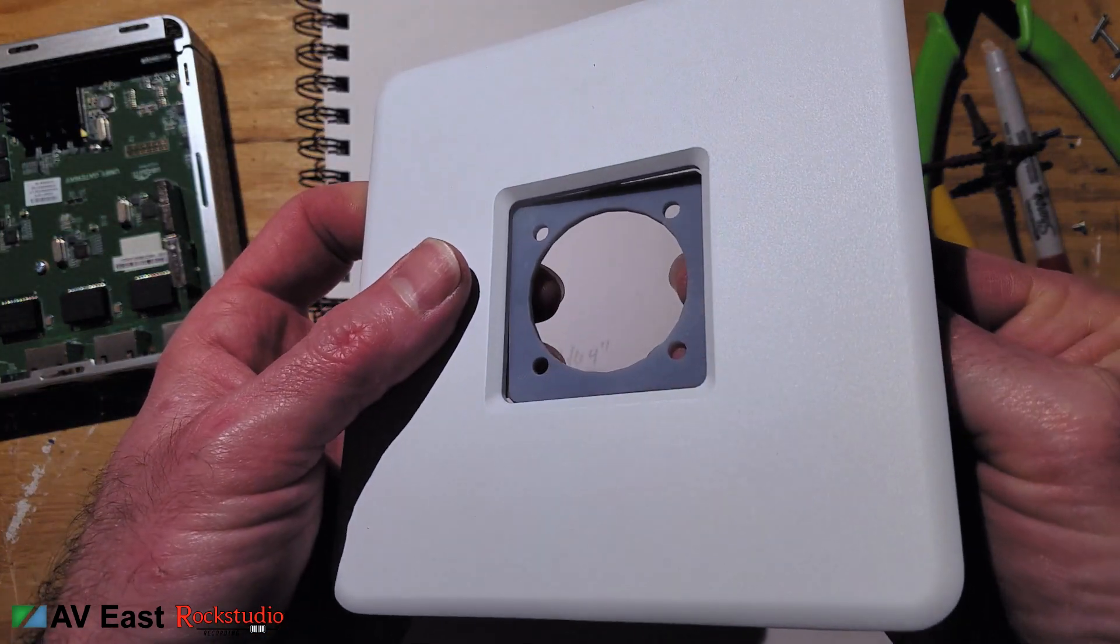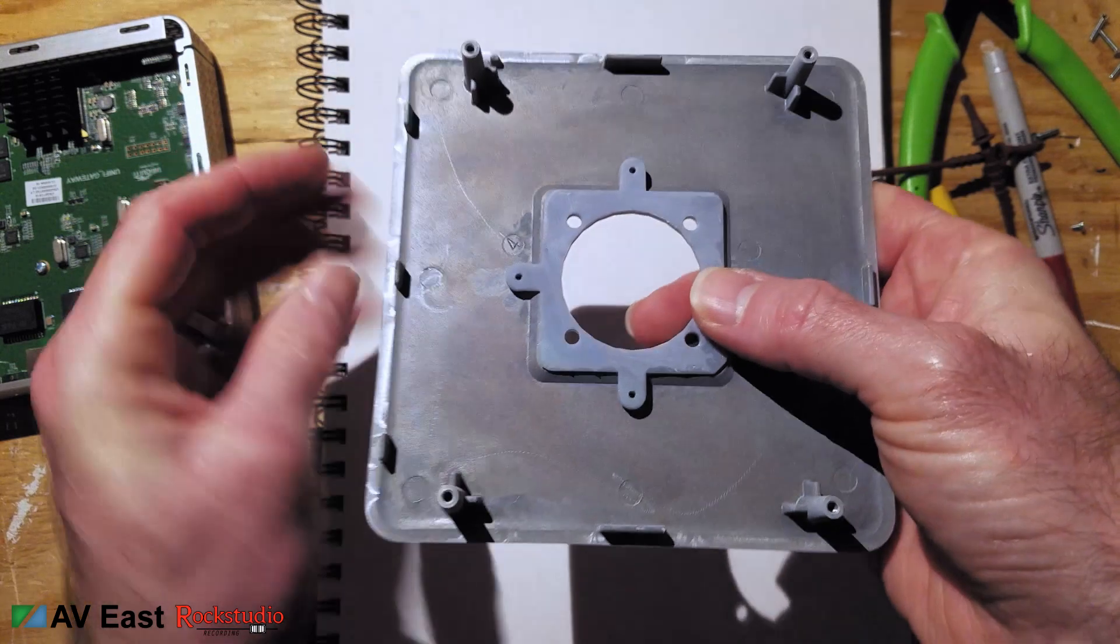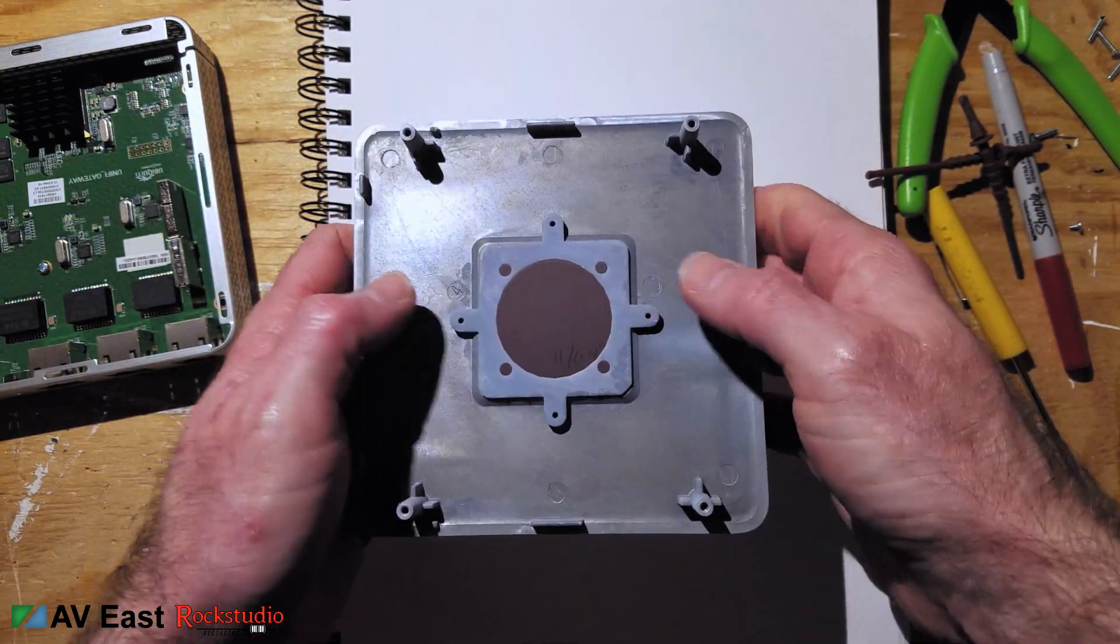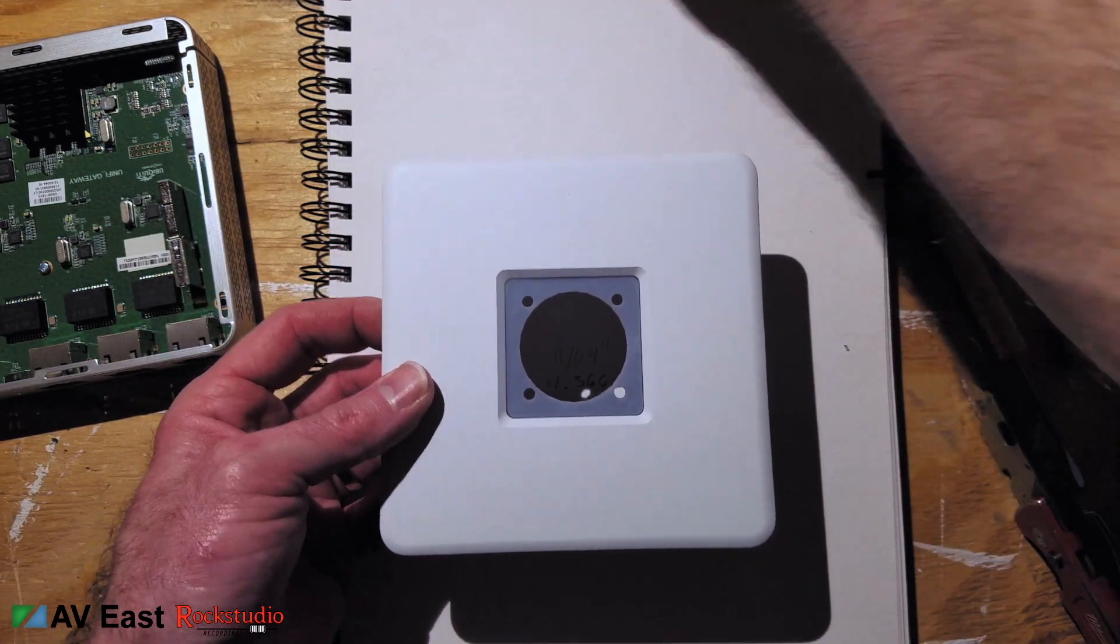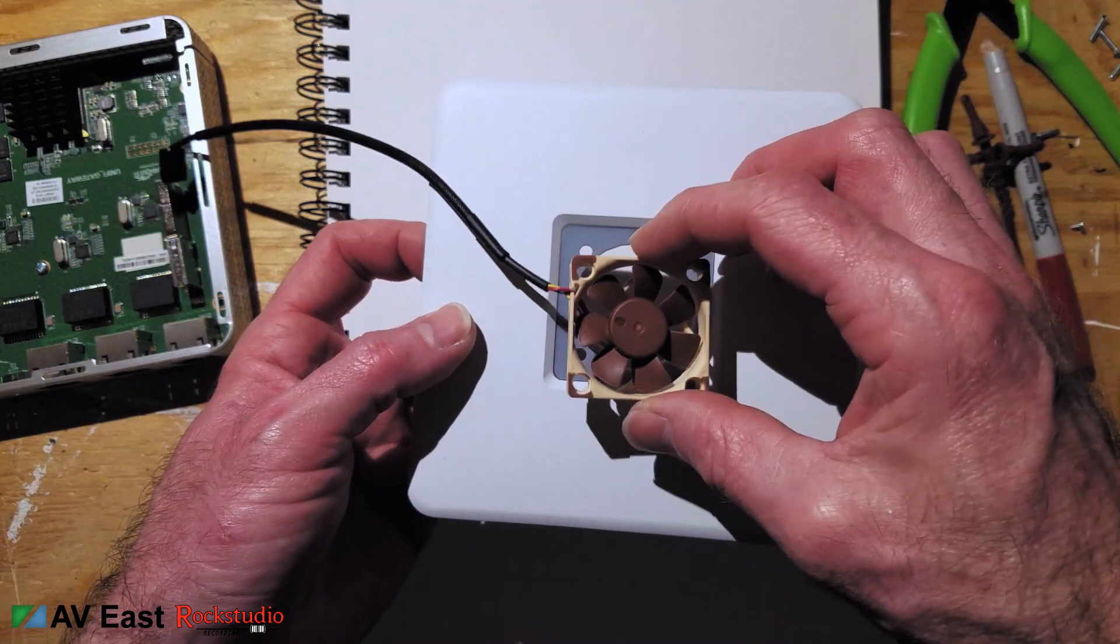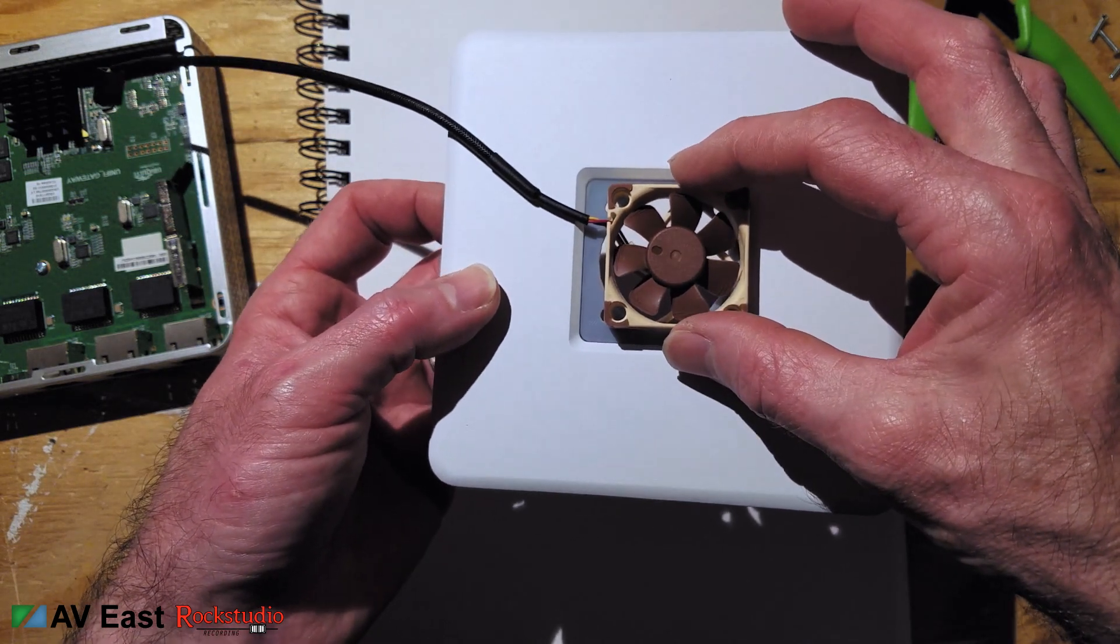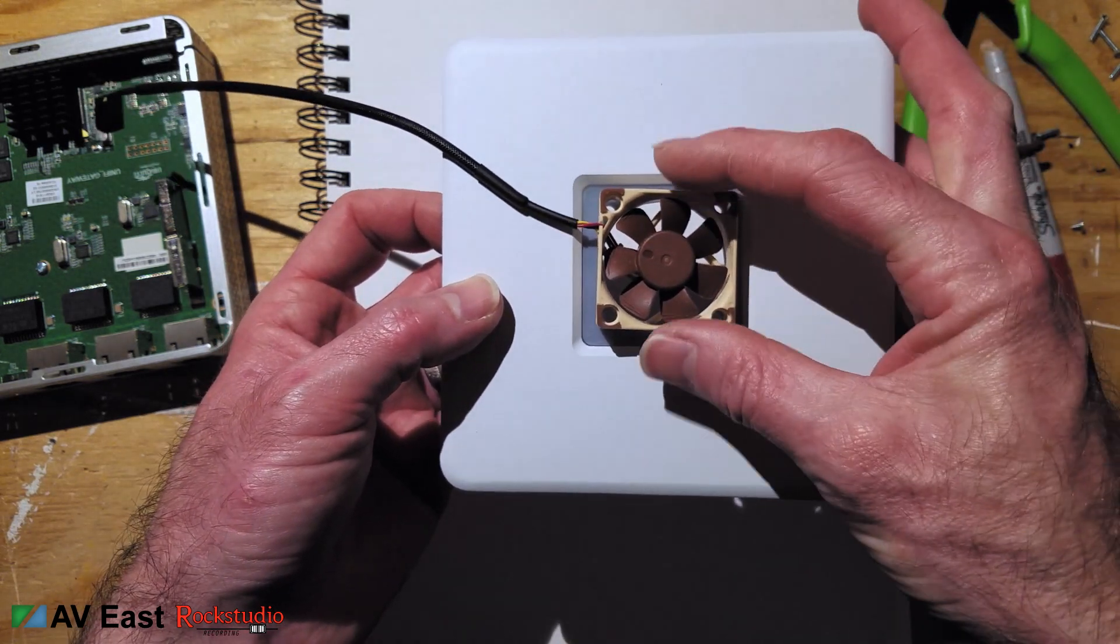After I made this piece I actually looked on Thingiverse and there are a couple options out there for putting a fan on your USG. One of them that looks the most promising is a shroud that mounts to the back of the USG so you don't have to take it apart and void your warranty and it uses a blower fan to push cool air through the USG from the back.